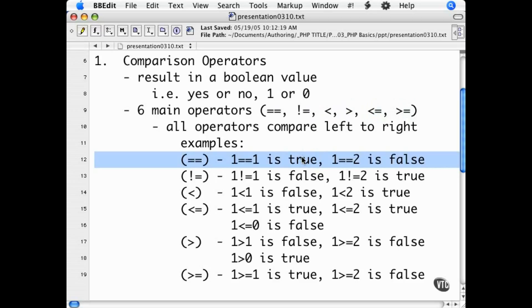The double equal sign compares the value to the left with the value to the right. If they are equal, it returns true. If they are not equal, it returns false. Do not confuse this with the single equal sign. A single equal sign assigns the value on the right to the variable on the left. A double equal sign compares them.